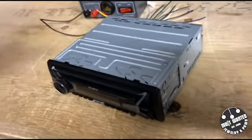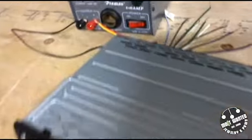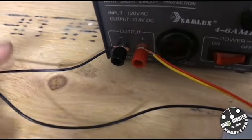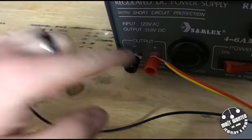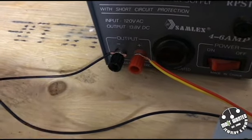But other than that, the main wires that we're going to need to make sure this thing turns on and functions is going to be the red which is the power, the yellow which is the battery, and then the black which is going to obviously be the ground. So you're going to connect the black to the black post and then the red and the yellow you can twist together and put on the red post.